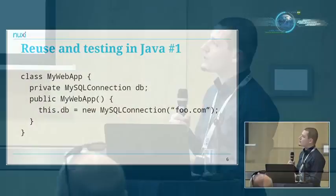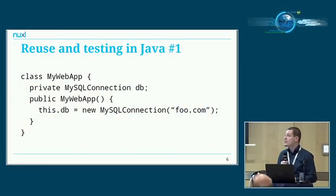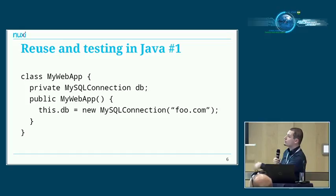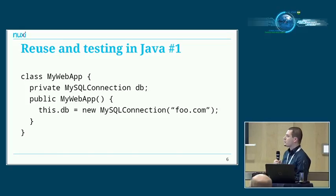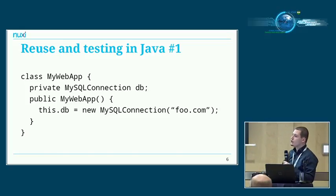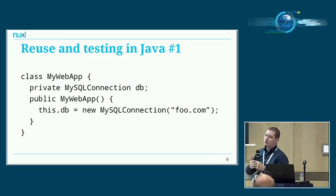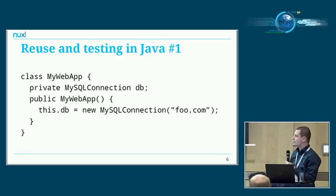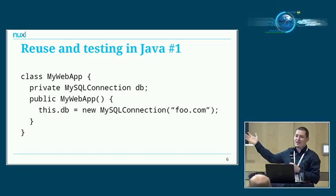I've added a couple of slides of Java code to illustrate dependency injection. Say you're writing your own web application in Java — you create your own class, and inside this class there's always a database connection being kept open. One of the worst ways to implement this is by creating a database connection inside the constructor where you just hard-code the server as foo.com. We can all agree this is really bad from an administrative point of view, especially since you have to recompile your program to make it use a different database server.